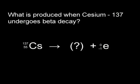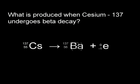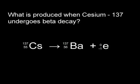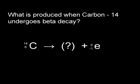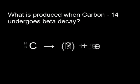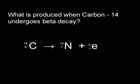What happens when cesium-137 undergoes beta decay? It becomes barium-137. What happens when carbon-14 undergoes beta decay? It becomes nitrogen-14.